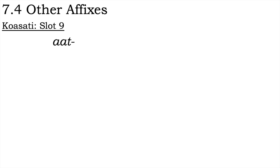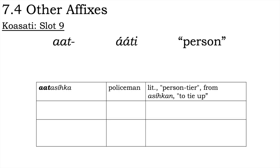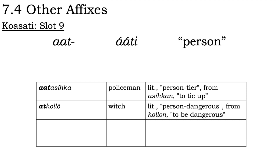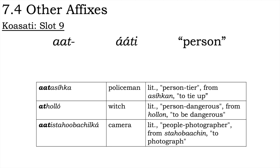It is fairly easy to determine the origins of a number of the Koasati verbal affixes described in the previous video. The indefinite prefix aat- 'someone' is connected to the independent noun aati 'person.' Its use as an indefinite prefix began with a form of incorporation, a process that can be seen in this prefix's use in nominalisations: atasihka 'policeman,' literally 'person-tie,' from asihkan 'to tie up'; athollo 'a witch,' literally 'a dangerous person,' from hollon 'to be dangerous'; and atasihobacilka 'a camera,' literally 'people-photographer,' from stahobacin 'to photograph.'